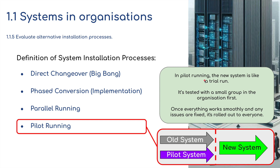In pilot running, the new system is like a trial run — it's tested with a small group in the organisation first. Once everything works smoothly and any issues are fixed, it's rolled out to everybody, and the pilot system becomes the new system for everyone.